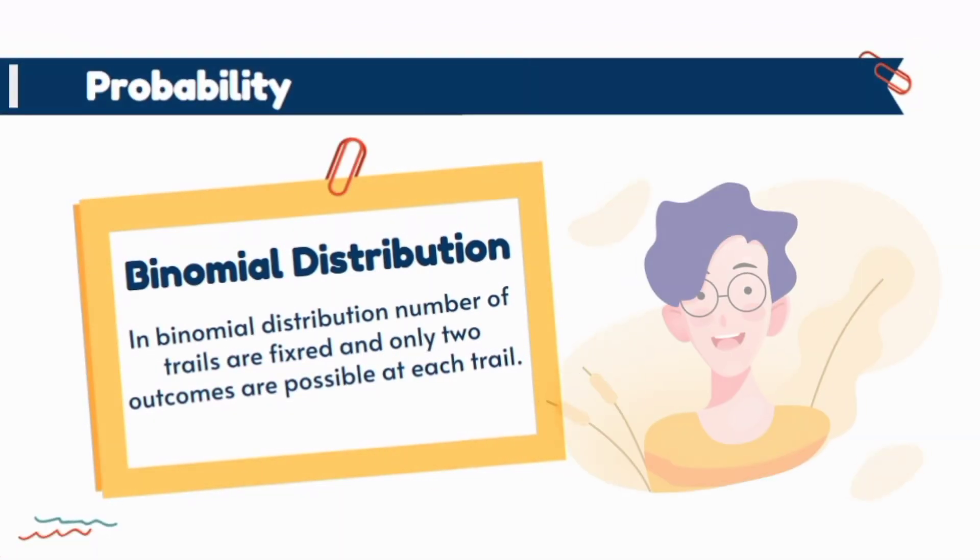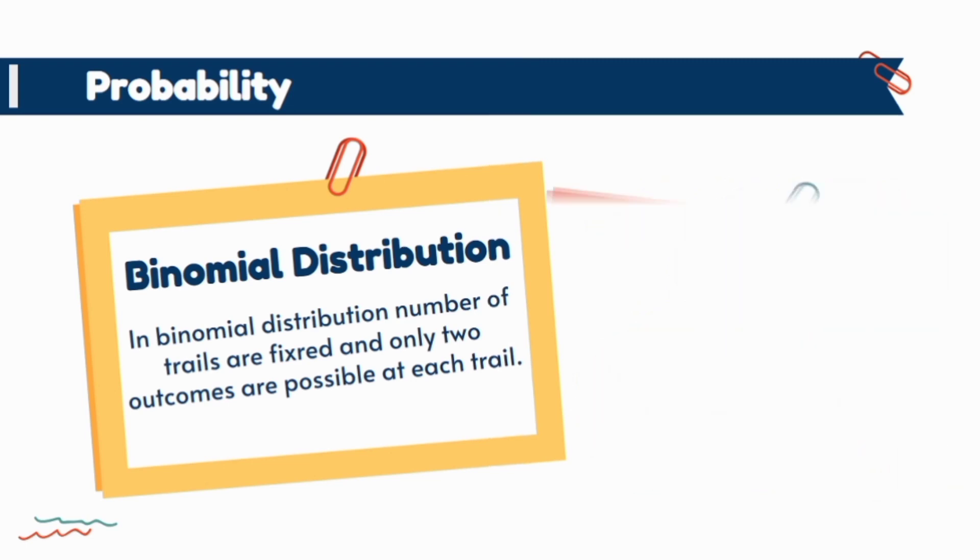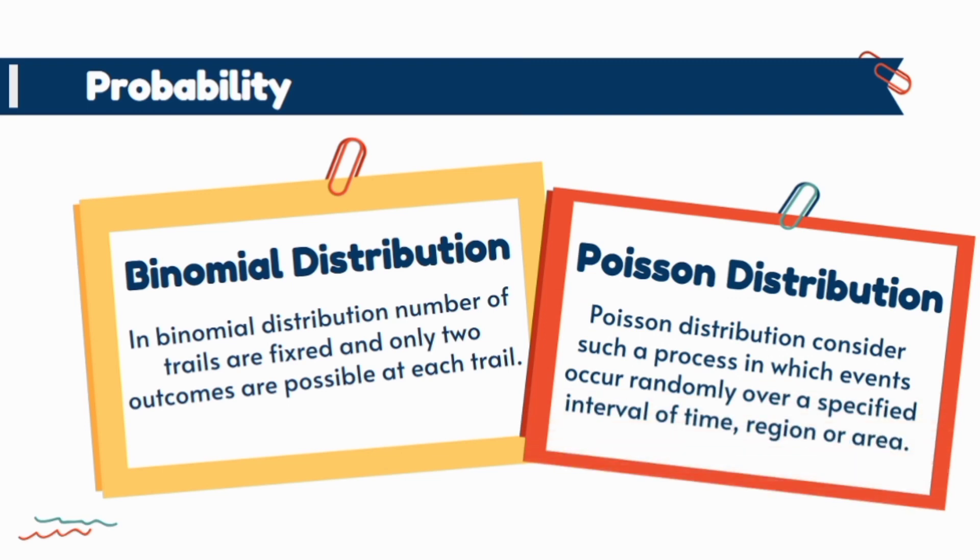We use different probability distributions when we deal with random variables. If the random variable is of discrete type we mostly prefer binomial and Poisson distribution. Binomial distribution is useful when the random experiment has only two possible outcomes just as success or failure for each trial, and Poisson distribution is useful to describe the probability of events that occurred in time region or area.